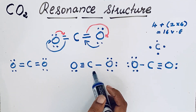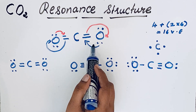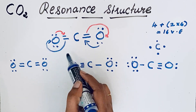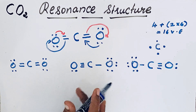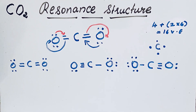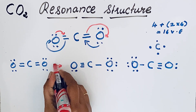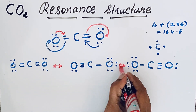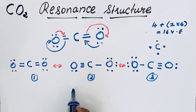Counting the electrons: 2, 4, 6, 8, 10, 12, 14, 16 — the same number of valence electrons are present. There are no other possibilities; any further changes yield the same structures. So these are the three resonant structures of carbon dioxide. These resonant structures can be shown by a double-headed arrow. Thanks for watching.